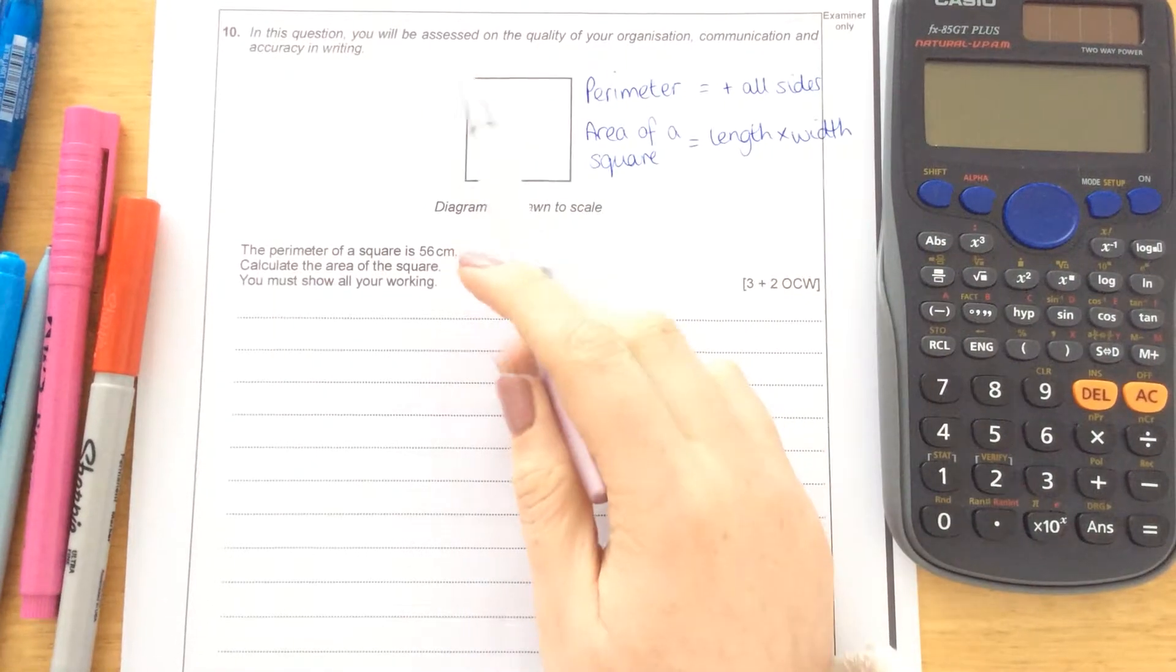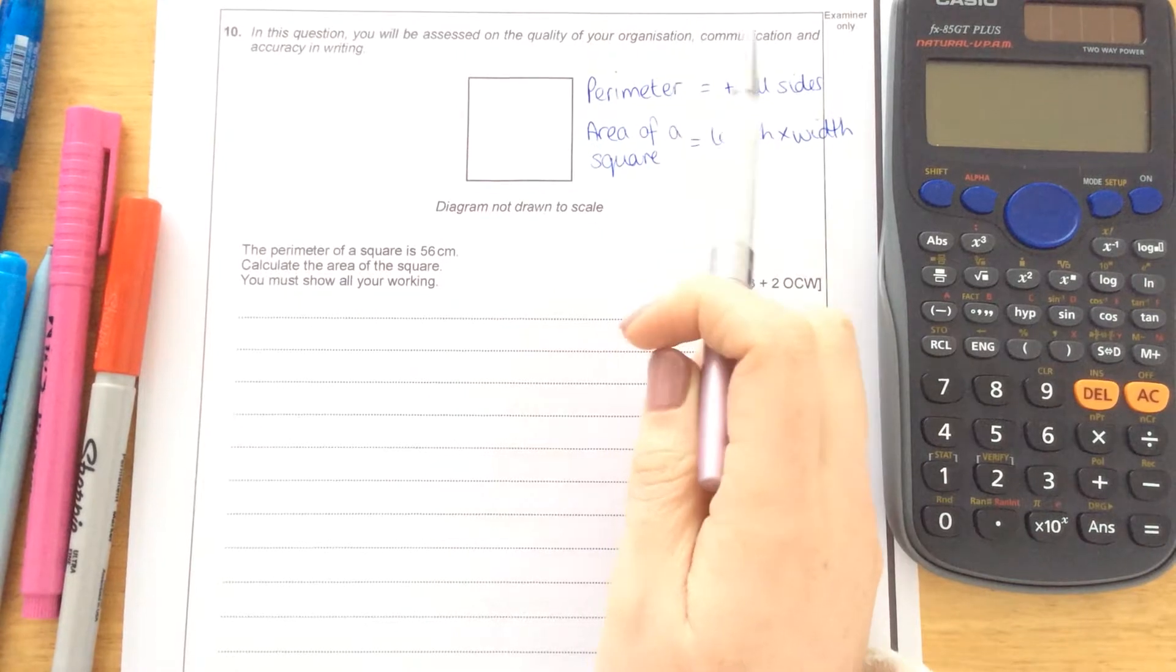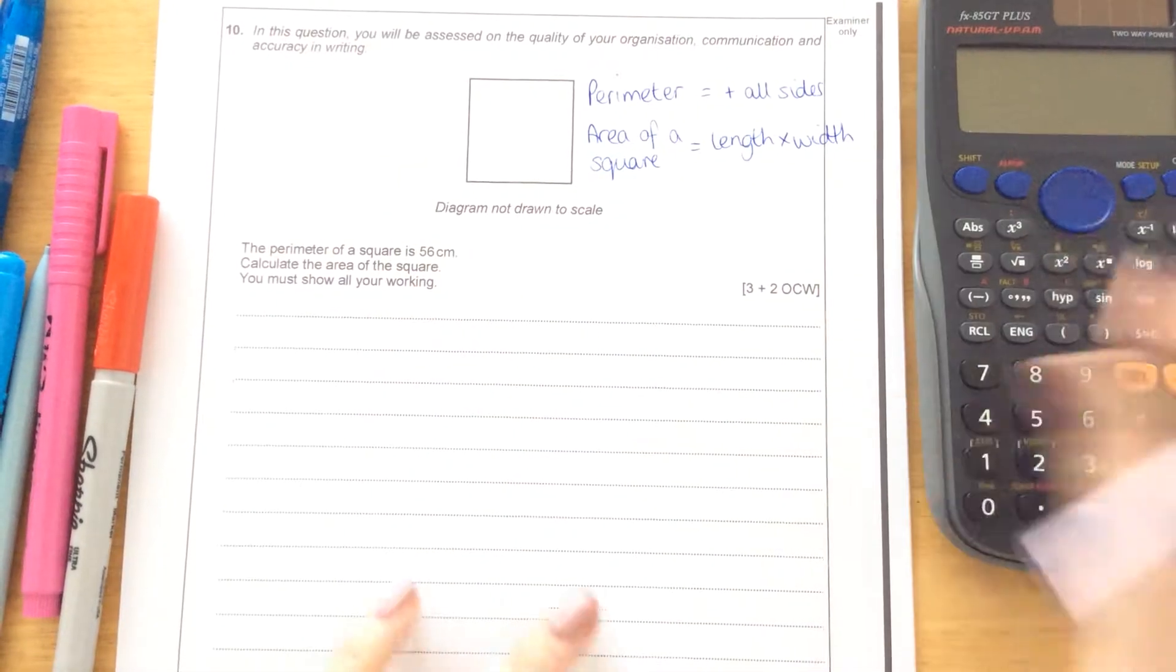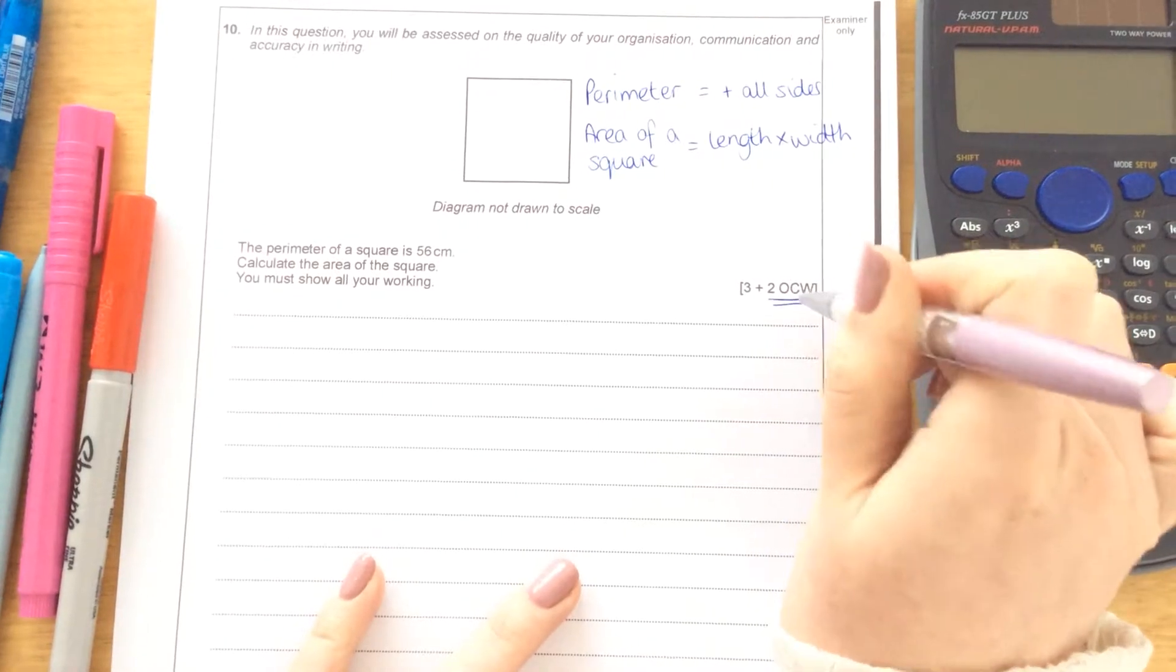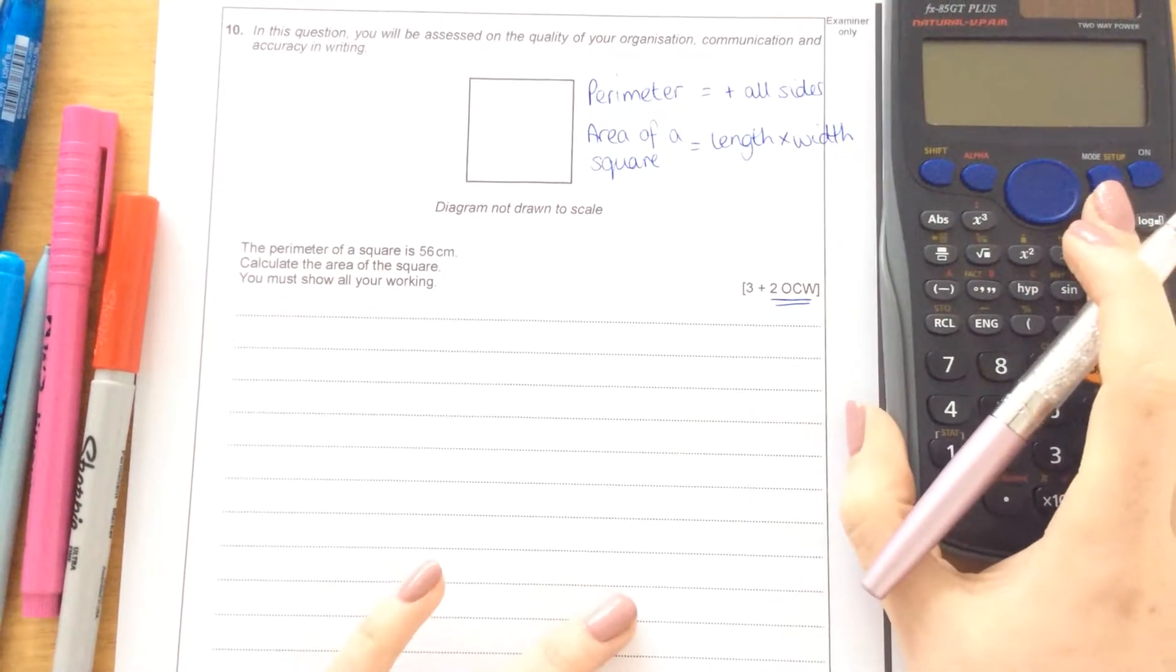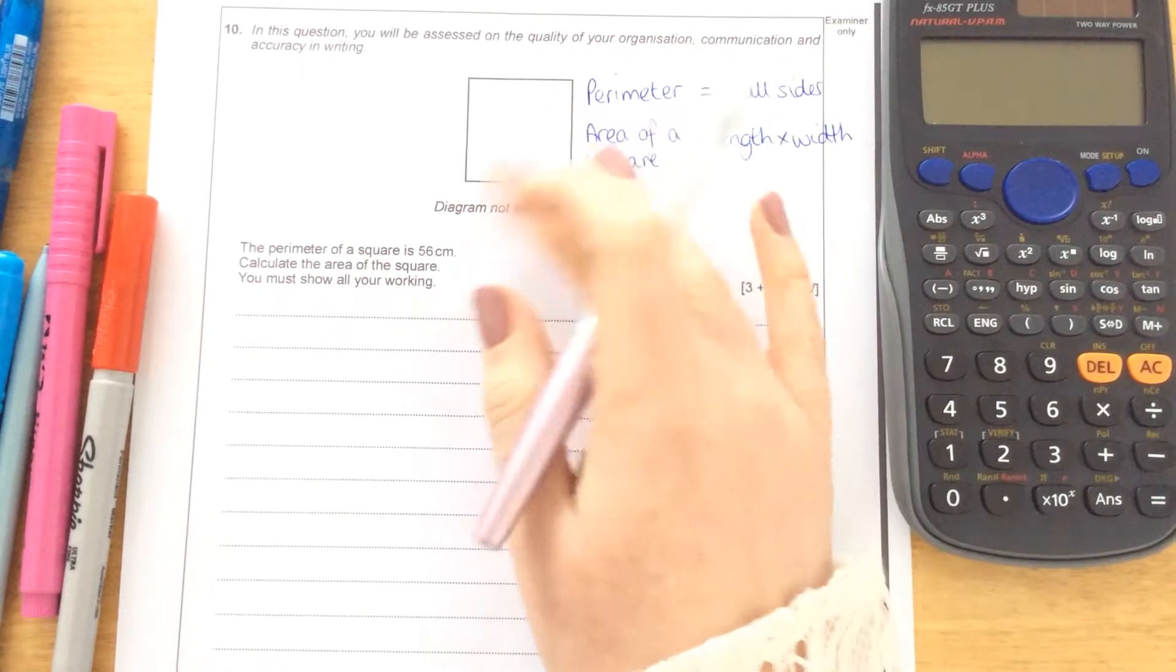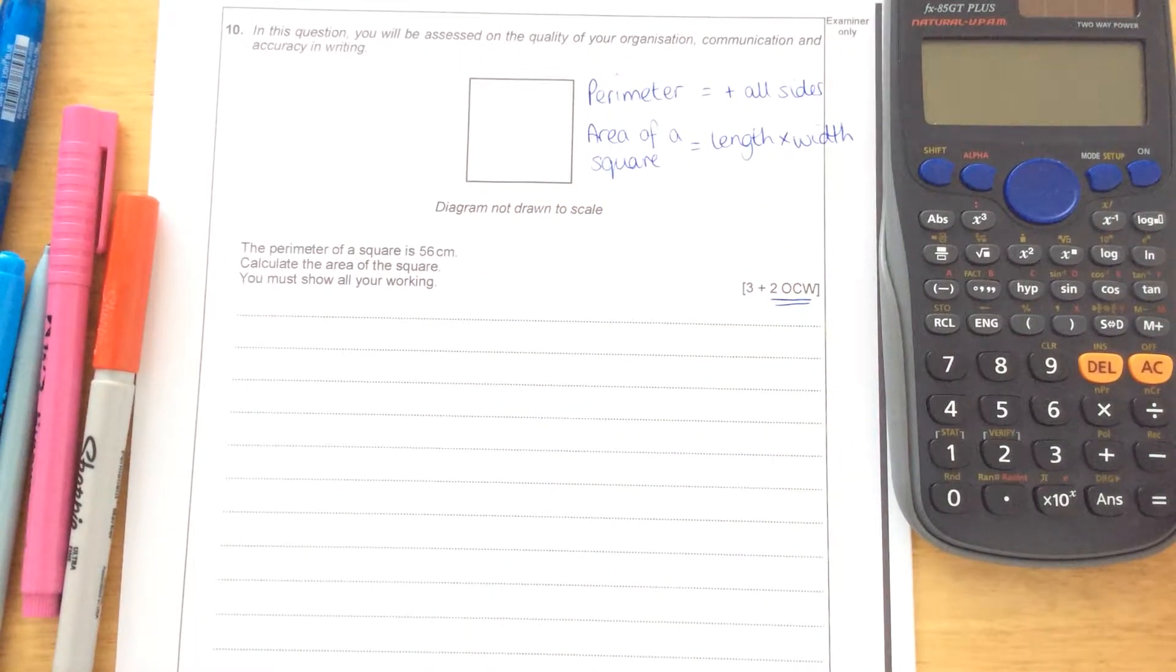Question 10. In this question you'll be assessed on the quality of your organisation, communication and accuracy in writing. So that's these two marks here for OCW. The trick is to write as little as possible because the more mistakes you make, the more marks they're going to end up taking off.